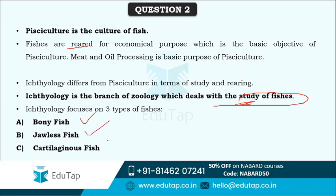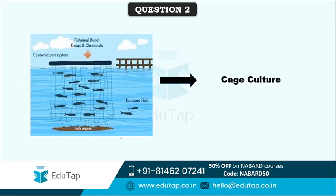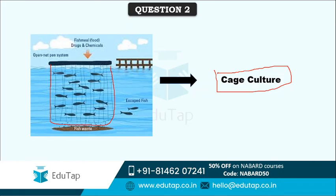Cage culture is also related to fishes. In cage culture, fishes are held in floating net pens - as you can see in the picture, this is a floating net pen in which fishes are held. So I hope you understand the difference between Pisciculture, Ichthyology, and cage culture - all are related to fishes but there is a minute difference between all of them.